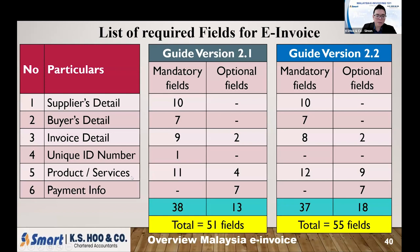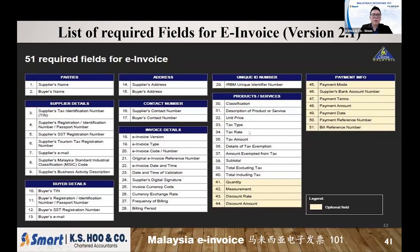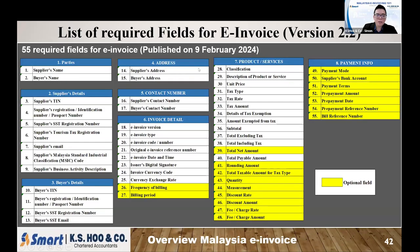The fields cover supplier details, product and service details, and payment information — these are what you need to key in your system when you issue an e-invoice to your customer. The yellow-colored boxes are optional fields; the white-colored boxes are compulsory and mandatory to fill in.